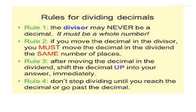Then dividing decimals. Same rule. The divisor may never be a decimal. It must be a whole number. If you move the decimal in the divisor, you must move the decimal in the dividend the same number of places. After moving the decimal in the dividend, shift the decimal up into your answer immediately. Don't stop dividing until you reach the decimal or go past the decimal.